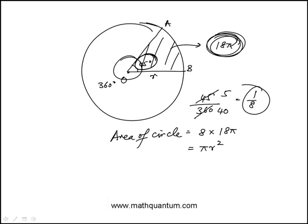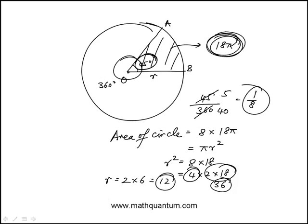If the radius is r, πr² equals 8 times 18π, which means r² equals 8 times 18, and this can be written as 4 times 36. The reason I'm doing that is because I need to take a square root. Square root of 4 is 2, square root of 36 is 6, so the radius is 12.